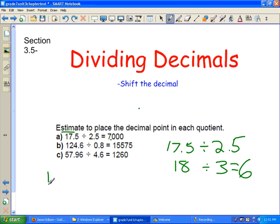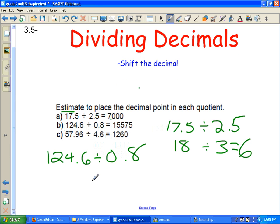In the next one, we've got 124.6, and we're going to divide that by 0.8. We'll round off 124 to 125, and we'll round off 0.8 to 1. And of course, anything divided by 1 is still going to be the same amount. So what's the closest we'll get to 125?